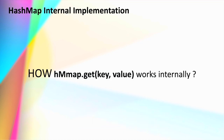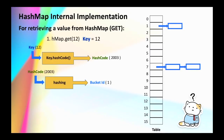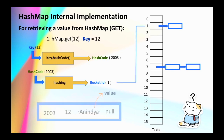The way HashMap retrieves data is quite similar to how it inserts data. Whenever we try to retrieve a value we use hashmap.get(key), passing the corresponding key. Internally, for retrieval it first calculates the hash code for the key. For key 12, this again generates hash code 2003, and the hashing function produces bucket ID 1 — the same as during insertion. We go to index 1, retrieve the node from that bucket, and since there is only one entry there, Java outputs that node's value as the response.